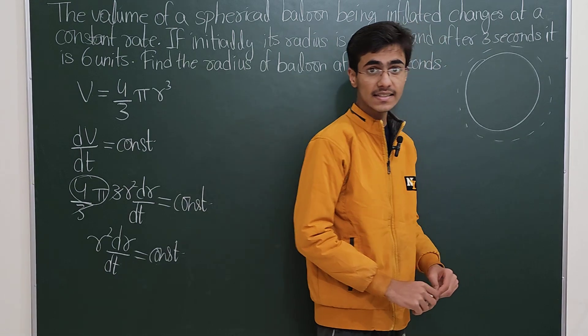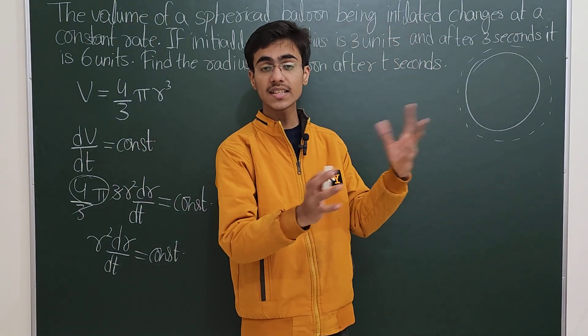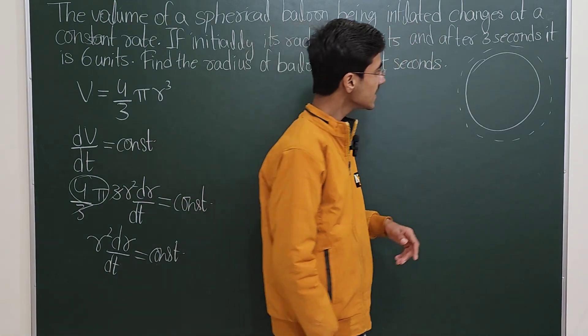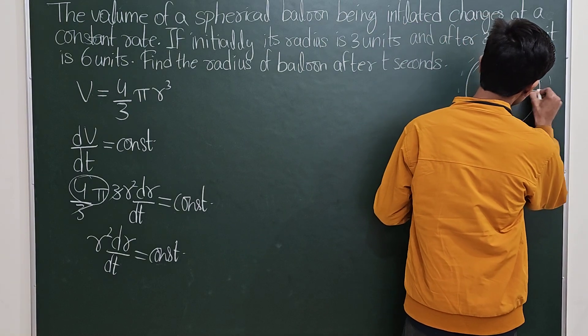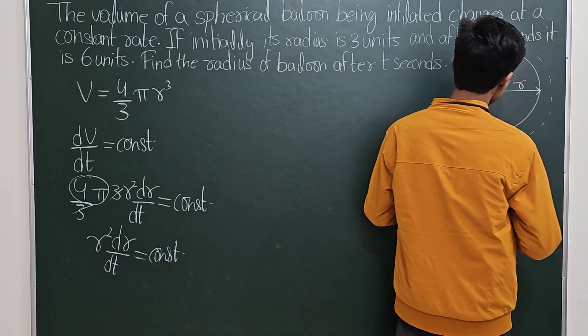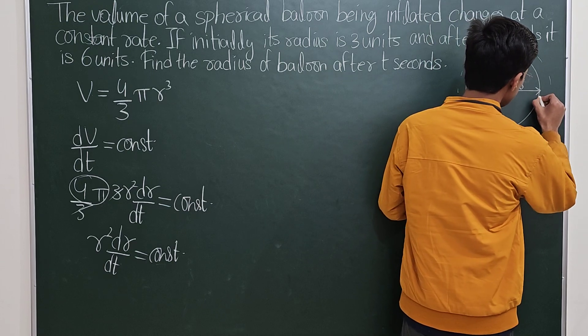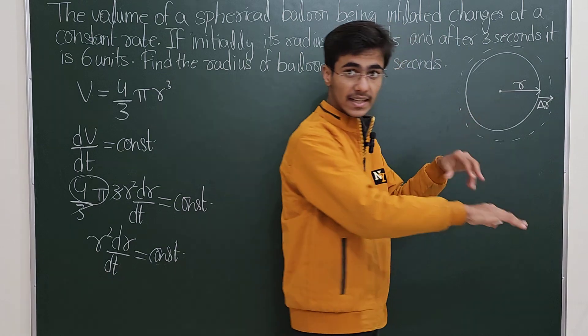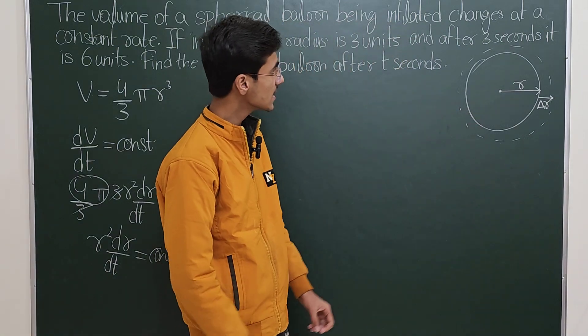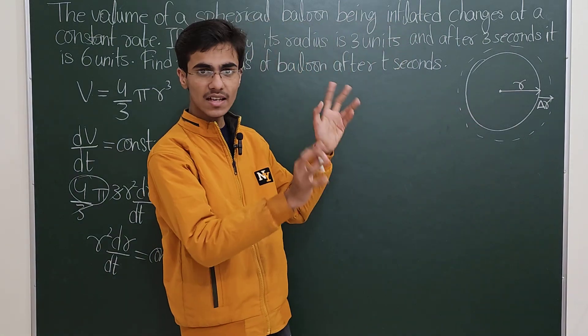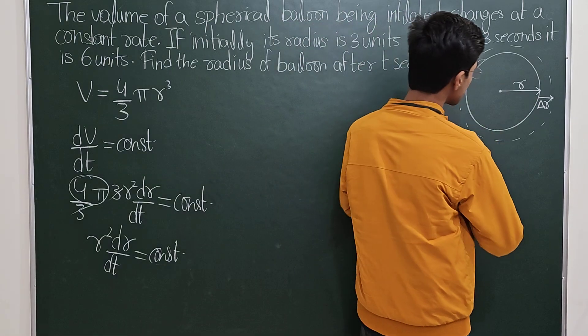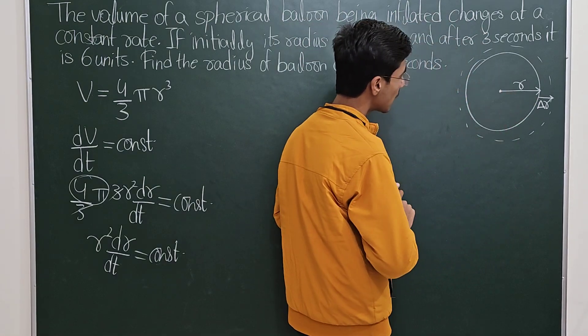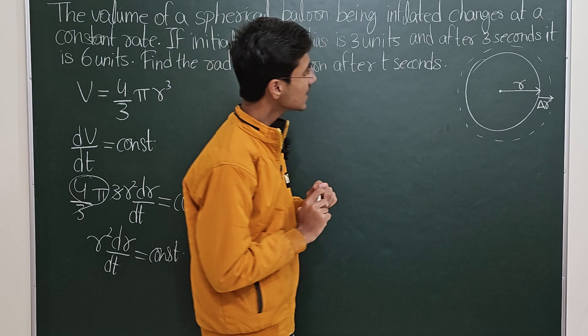To increase the volume, the radius must increase. So if the radius is r, you will see that the radius increases by an amount Δr. When the radius increases by Δr, the volume increases by an amount ΔV.